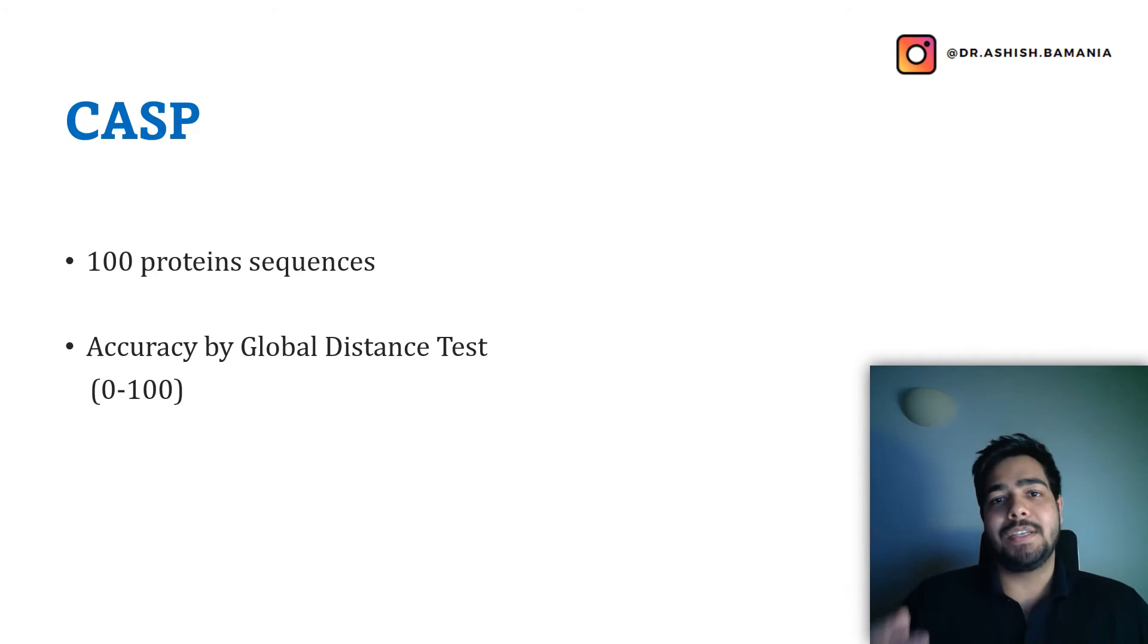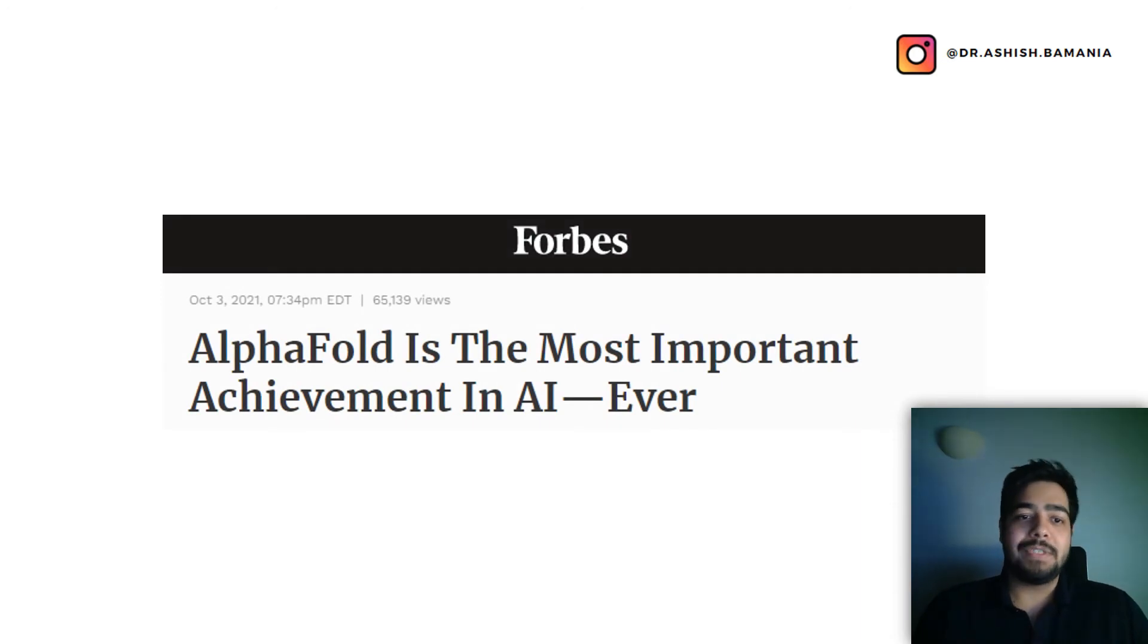The CASP competition has been running since 1994, and the predictions of various teams were very low. But something miraculous happened in 2018, and this was published in FOBS. The headline was: 'AlphaFold is the most important achievement in AI ever.' This is a big headline.